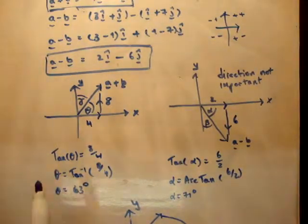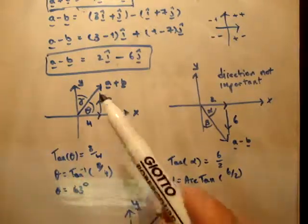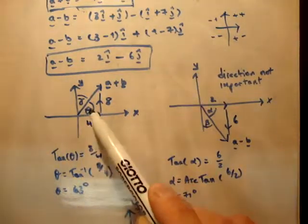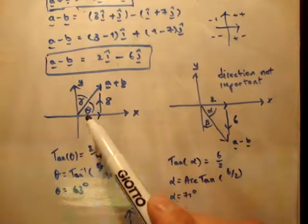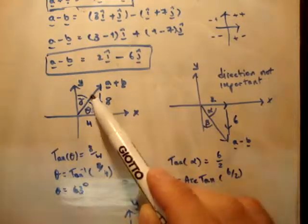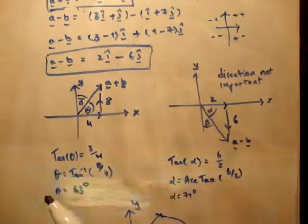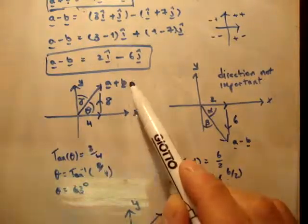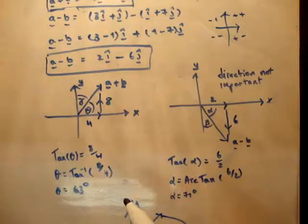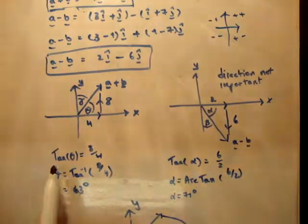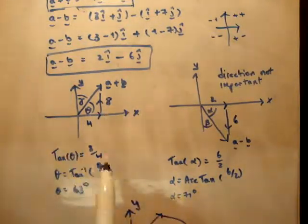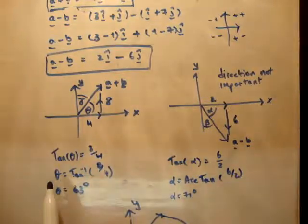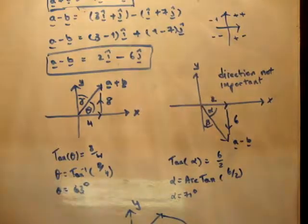From SOHCAHTOA, we know tan is opposite over adjacent. We have 8 and 4 in regard to theta, so we have both the opposite and adjacent. You could use Pythagoras to get the magnitude of the hypotenuse and use sine and cosine, but I'm going to say tan theta equals 8 over 4, opposite over adjacent. Theta equals inverse tan of 8 over 4. Theta equals 63 degrees.